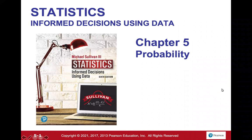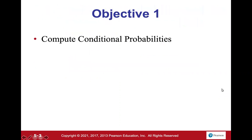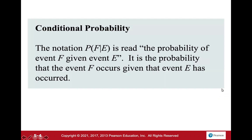Hey guys, chapter 5 — probability. This time it's conditional probability and the general multiplication rule. A conditional probability uses the notation P(F|E), where the vertical line means 'given.' So the probability of F given E is the probability that event F occurs, given that event E has already occurred.